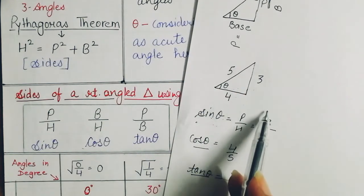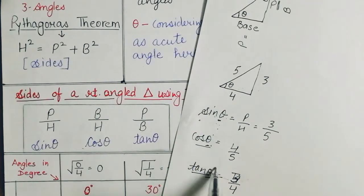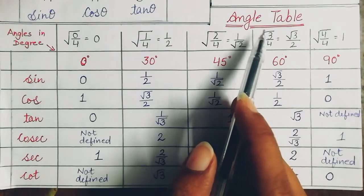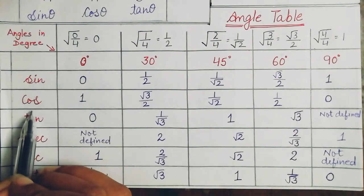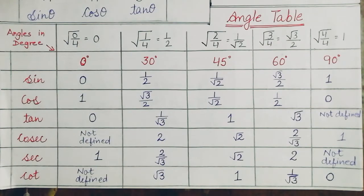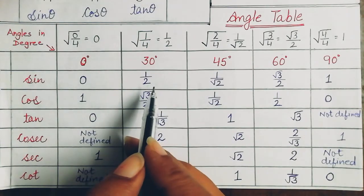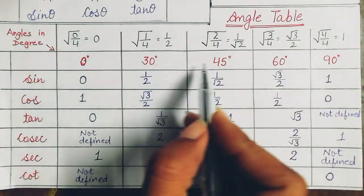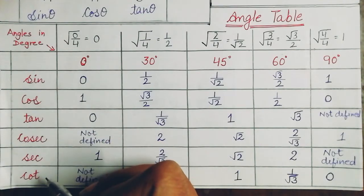Now, how can you measure the angles themselves? For that we will learn about the trigonometric angle table. We will use trigonometric ratios for acute angles. In a right angle triangle, one angle is the right angle and the other two are acute angles. When needed, we put the corresponding values of trigonometric ratios for these acute angles.